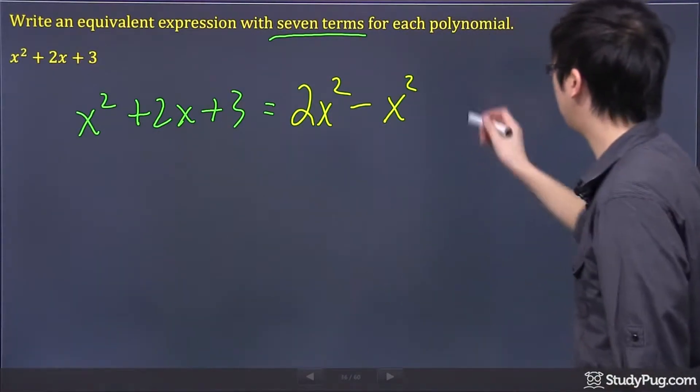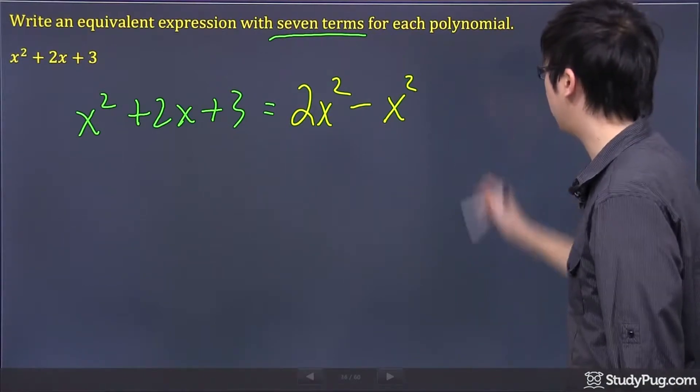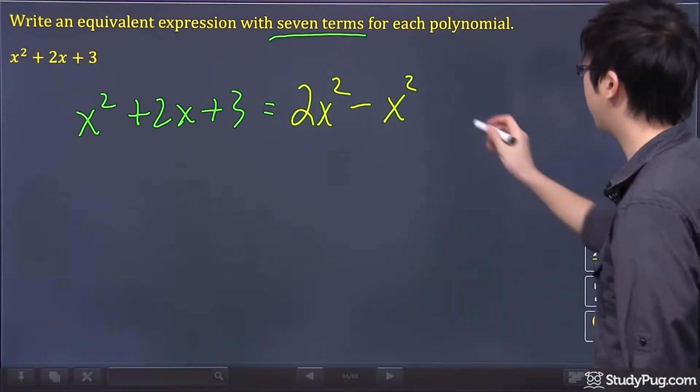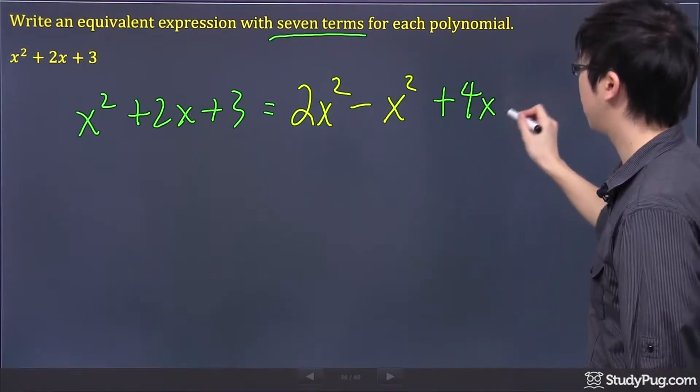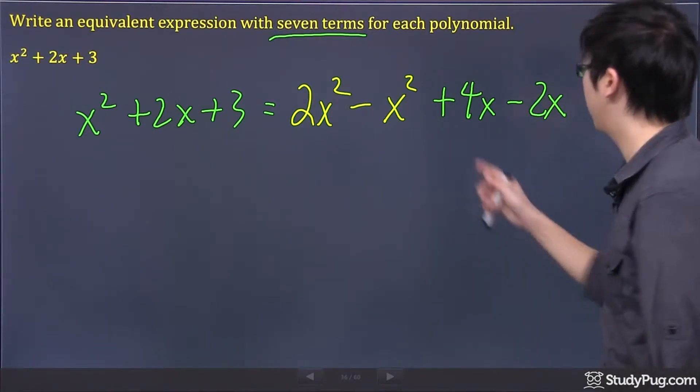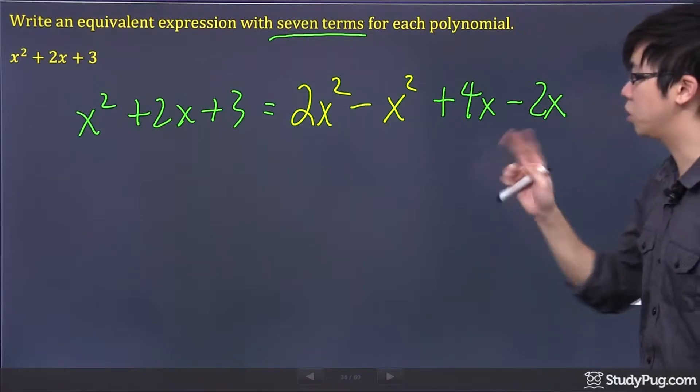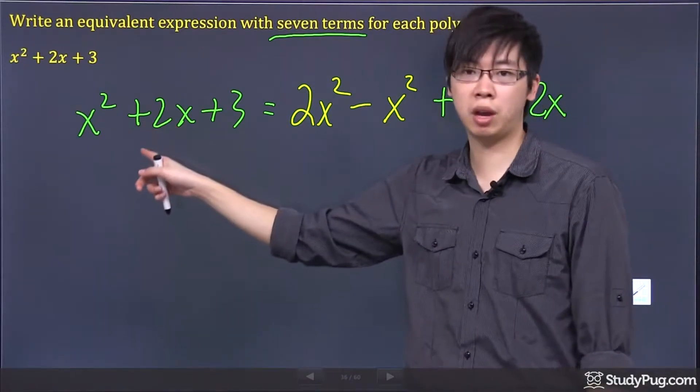What about the 2x? Well, I can say plus, let's change another color. Plus 4x and then minus 2x. Because these two guys right here will give me 2x in total. So that is my final answer.